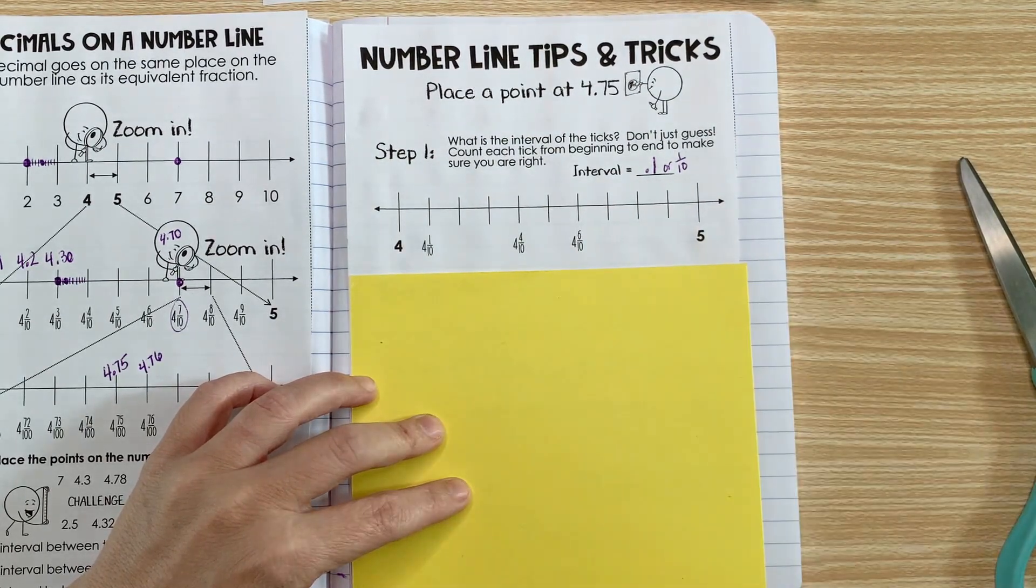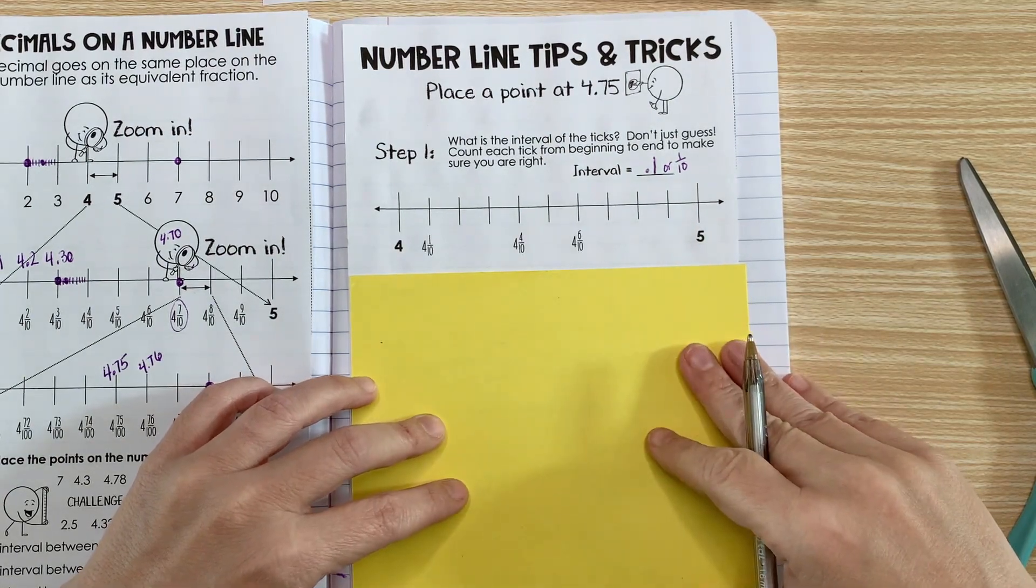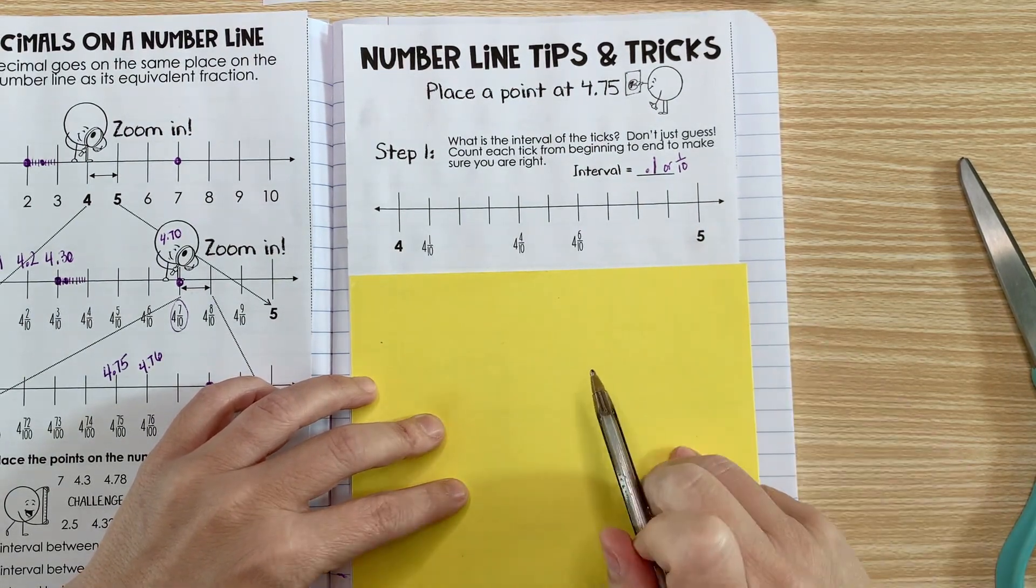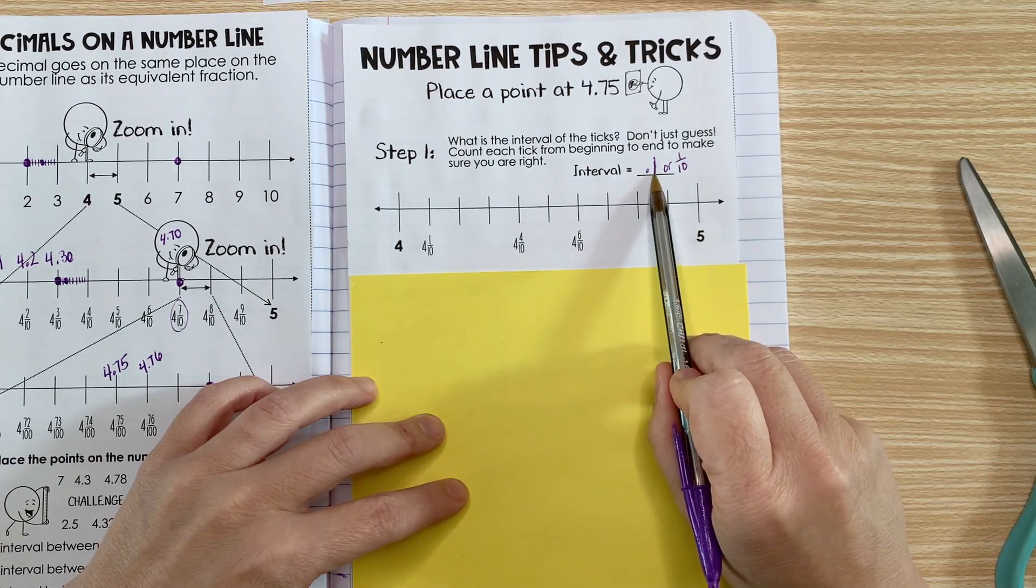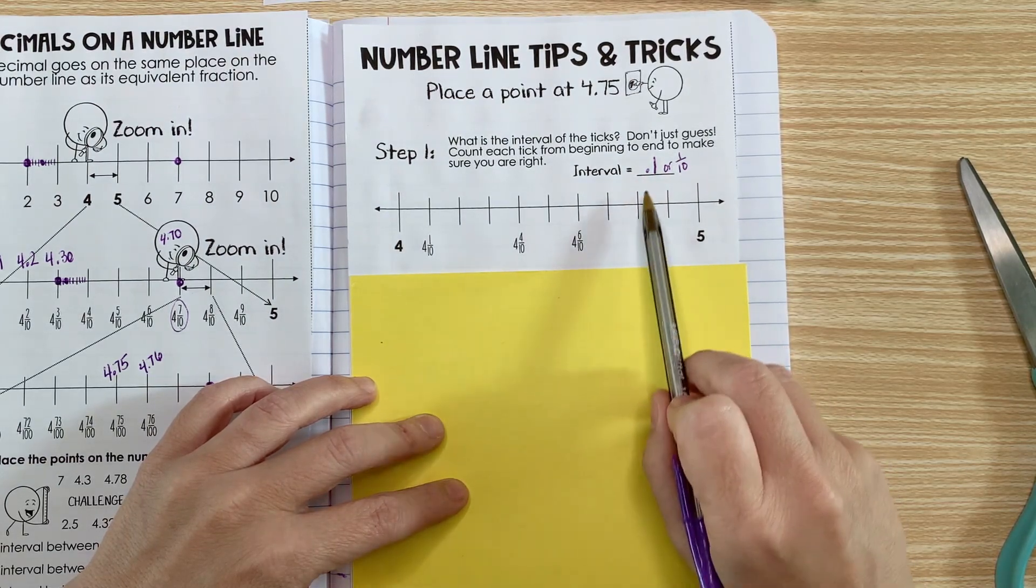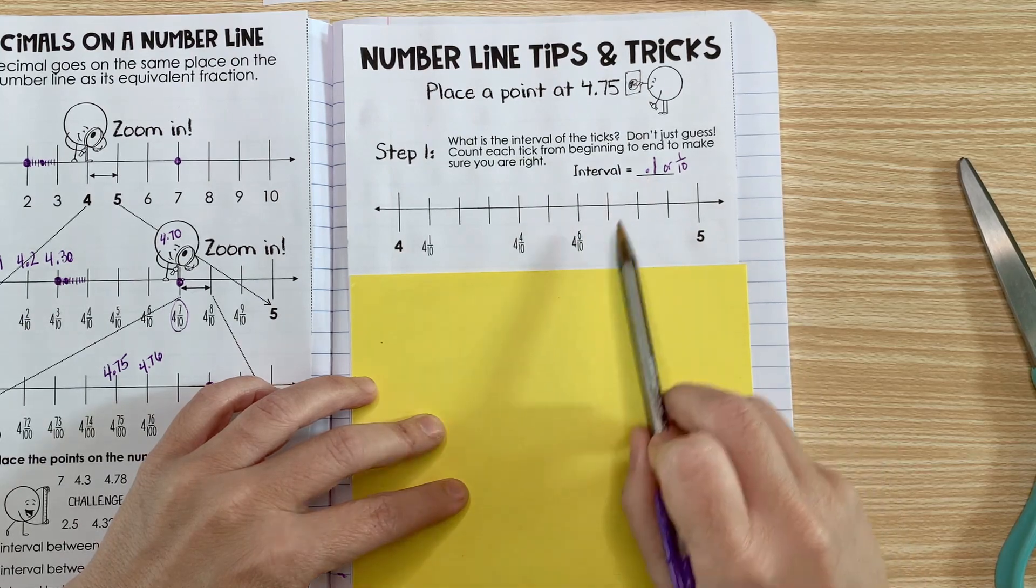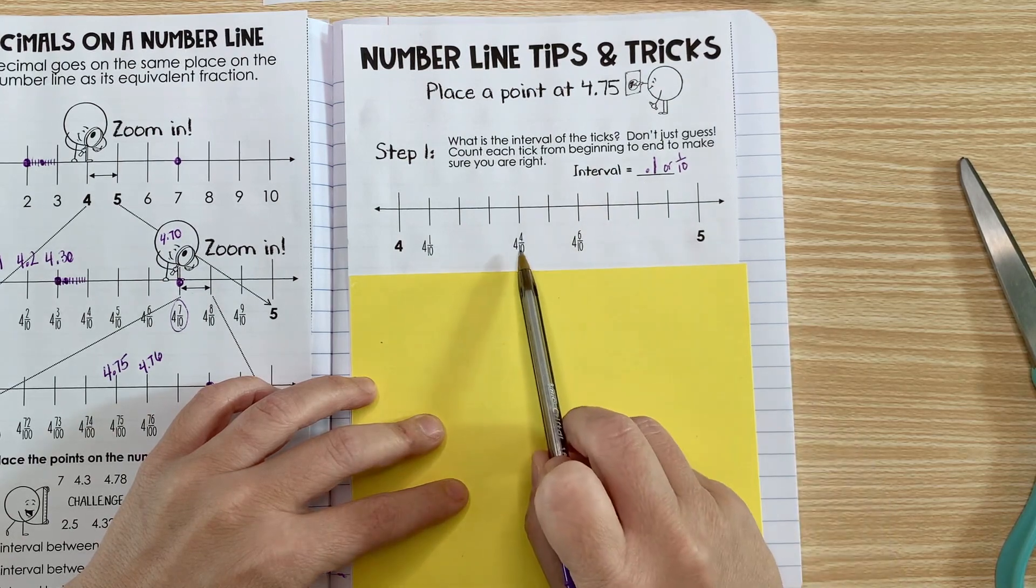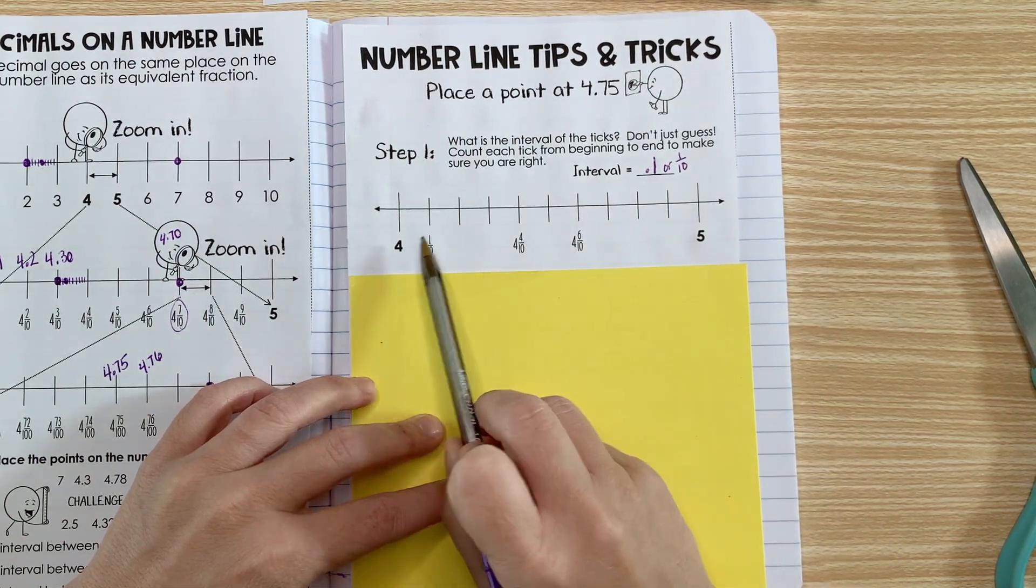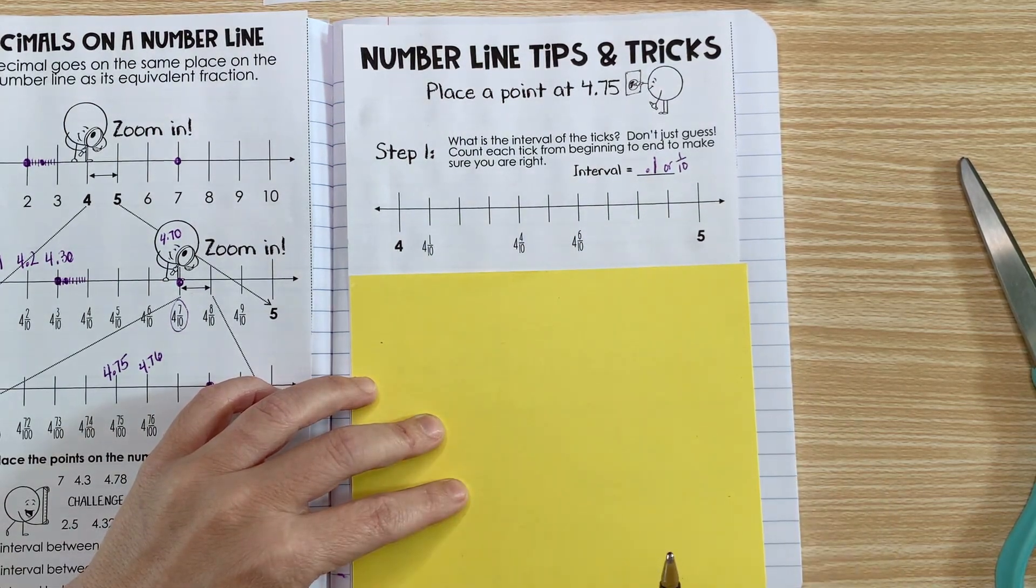So we know our interval. That's step one. It can get tricky because not every interval is by ones. Sometimes you might be counting by two tenths or five tenths. You don't always count by one tenth, so you can't just look at it and guess.